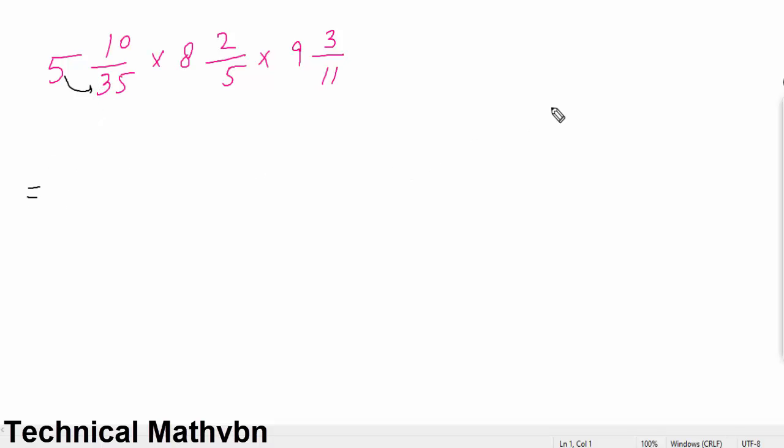35 multiply by 5: 5 fives are 25, carry 2, 5 threes are 15 - that gives 175. In this, what will we do? 5 threes are 15, 175 guys is the answer. Now add plus 10, so 5 plus 8 plus 1 gives 185.